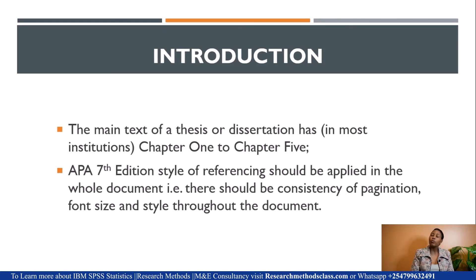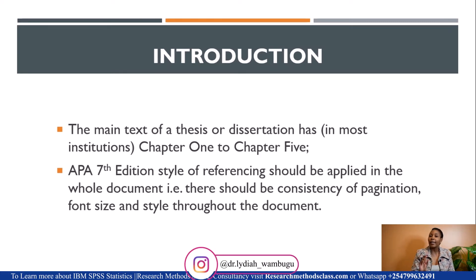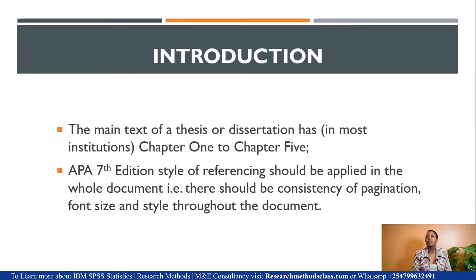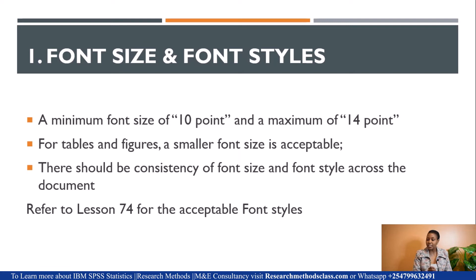When we talk about the main text or the main body, we are looking at chapters 1 to 5, which is what is composed in theses and dissertations in most institutions. We need to repeat that APA 7th edition should be applied across the whole document — from the way you set the margin, the pagination, and the font size and style — it should be used across the whole document. Now we have left the preliminary pages and we are in the main document. We start with the font size and font styles required.